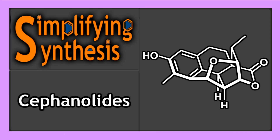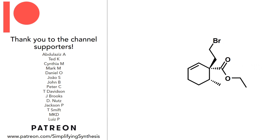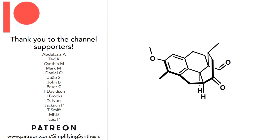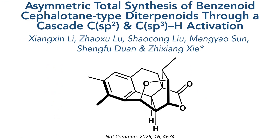Welcome back to Simplifying Synthesis. In this video, we are going to look at the total synthesis of a group of cephanolide compounds. This work was published in Nature Communications by the Shea Group in their paper 'Asymmetric Total Synthesis of Benzonide Cephalotene Diterpenoids Through a Cascade C-SP2 and C-SP3 H Activation.'